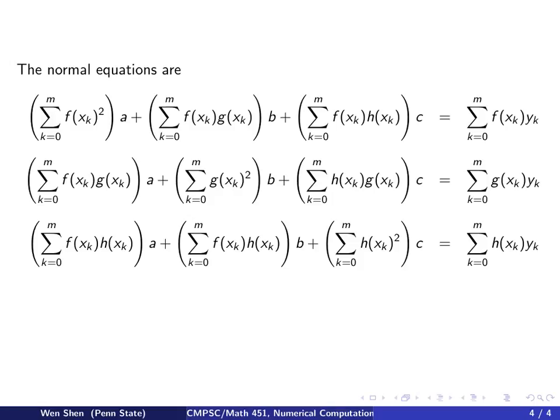And you see, once the data set is given, x_k and y_k are known, then what's in front of a, b, and c, this sum here in the end just becomes a number for each. So this will be just a number, this will be a number, this will be a number. So we get a three-by-three system of linear equations for three unknowns.